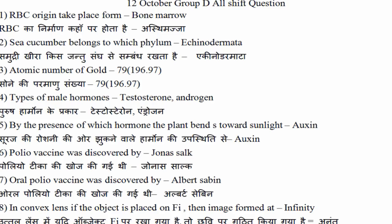आठवाँ question image का है. यह question पहली बार आया है, इससे पहले कभी भी नहीं पूछा गया था. तो इसके उपर हम एक session लेके आएंगे बहुत जल्दी. जो उत्तल lens होते हैं, अगर उसमें वस्तु F1 पे रखी जाए तो उसका जो प्रतिबिम्ब है वो infinity — अनंत पे बनेगा.